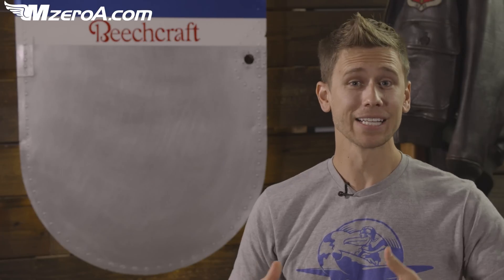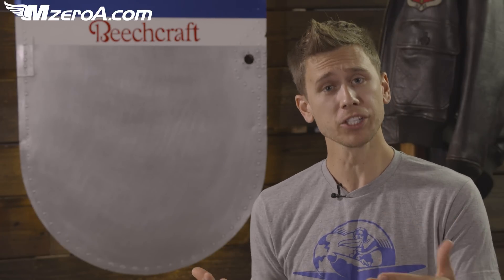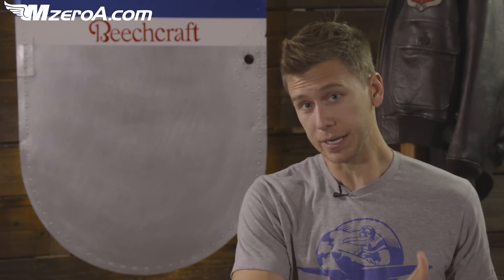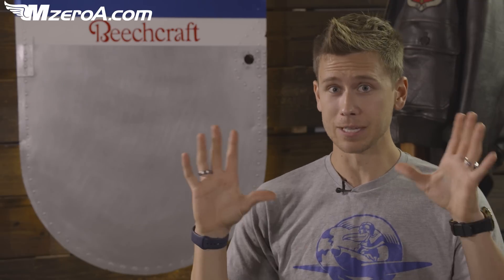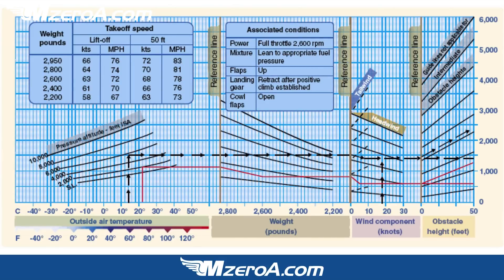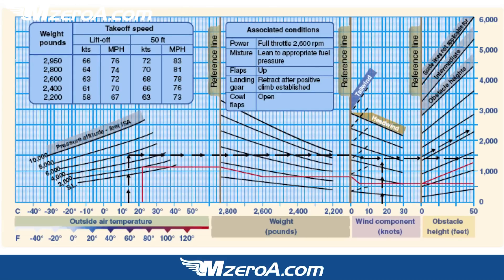Takeoff and landing distances are always tough, especially as it pertains to the new written test — we went from PTS to ACS. But even on the new written test, they still give us this basic takeoff and landing distance chart. Even though you may do it differently in your Piper Warrior, your Cessna 172, your Cirrus, inside the POH, how you come to the answer is different. Yet we have to learn this one generic one for the written test, and that's the chart you see on your screen right now — a basic takeoff and landing distance chart with associated conditions.